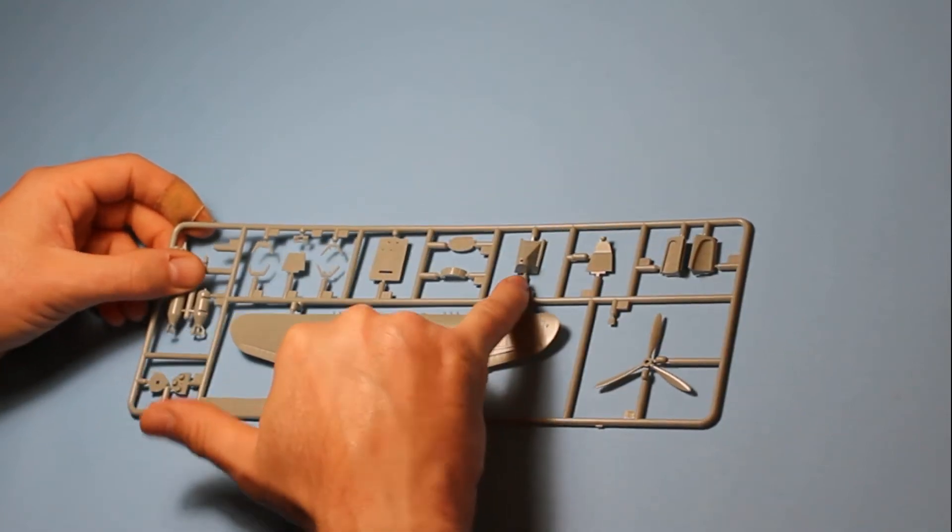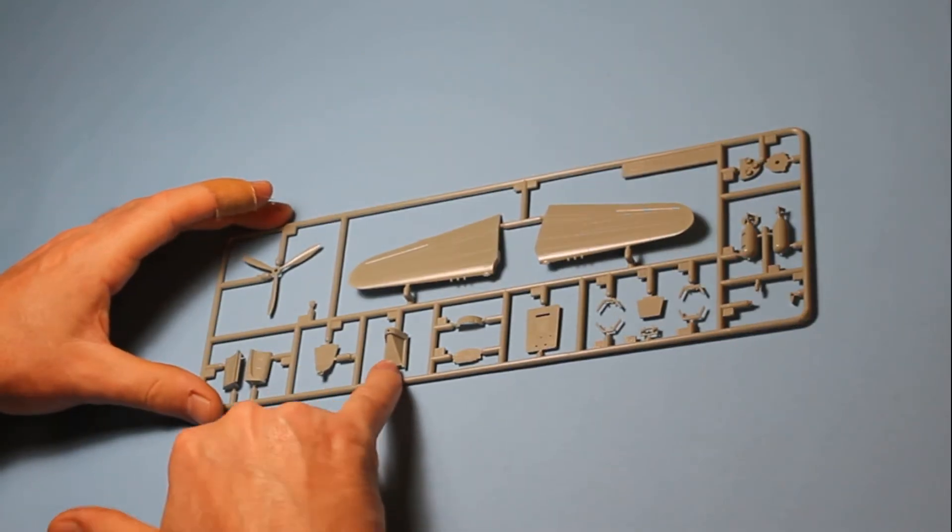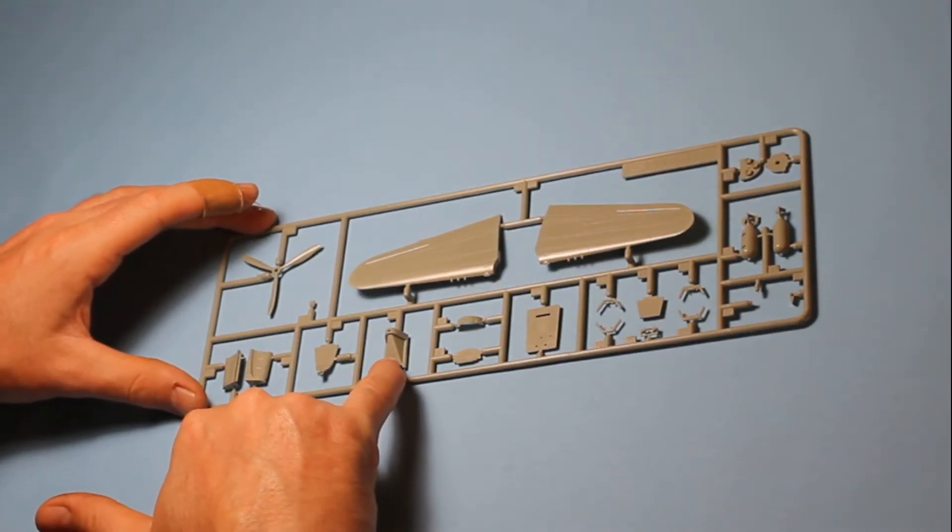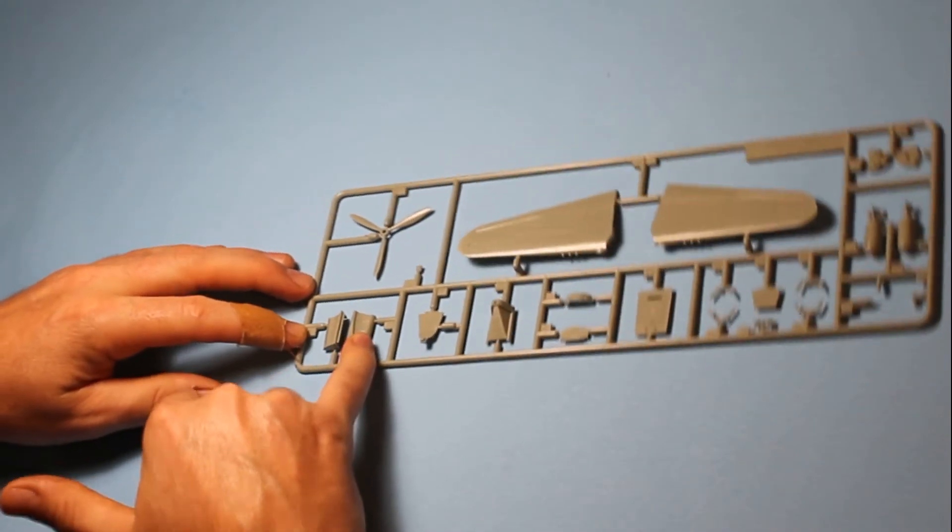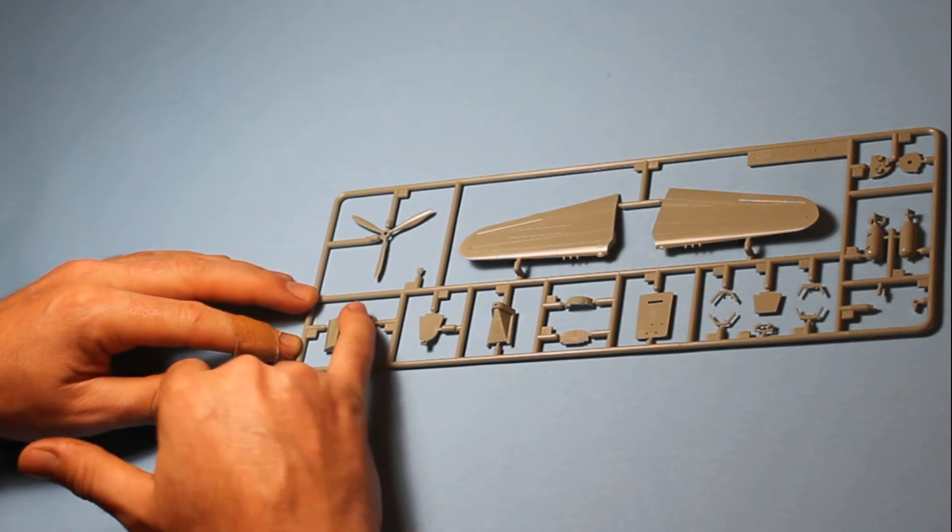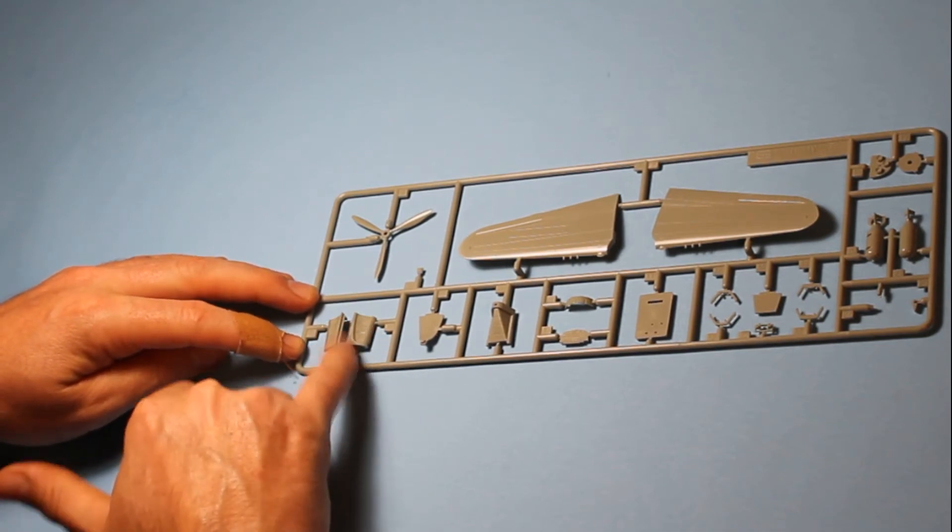And here you can see the different parts for the rear of the fuselage, rear of the cockpit, sorry, so that's the N version. And then you've got the standard parts, which is more like the usual P-40E, with these parts here.